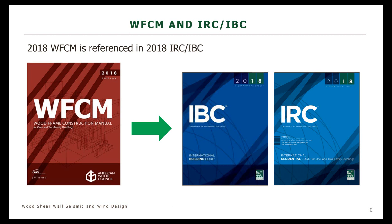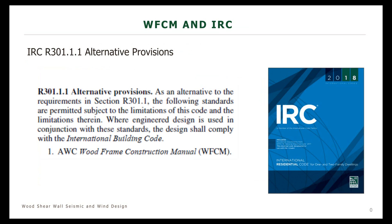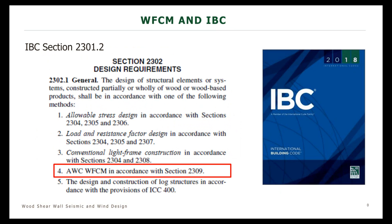The 2018 WFCM is referenced in both the 2018 IRC and IBC. It is primarily for residential structures, but it does have uses beyond single-family structures. It can be used for one- and two-family dwellings as stated in the title of the document, but you can see it's permitted in IRC R301 for the alternate provisions, and if you go into IBC section 2301.2 you'll see it referenced there as well.